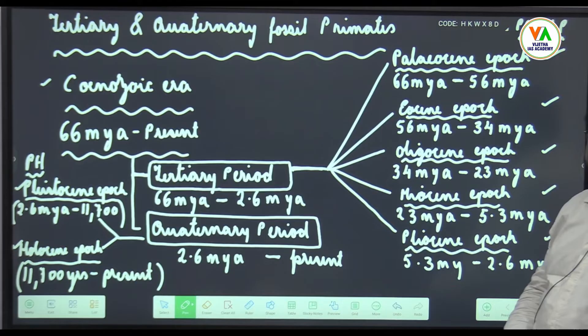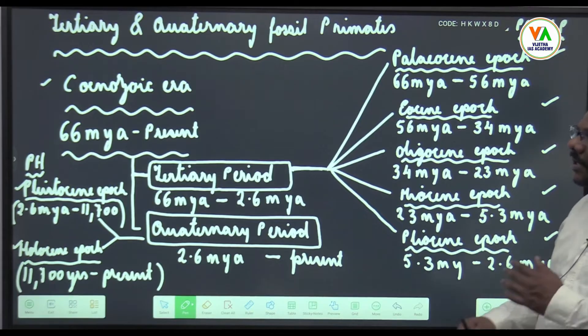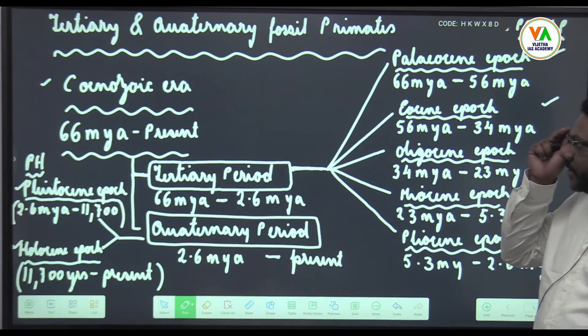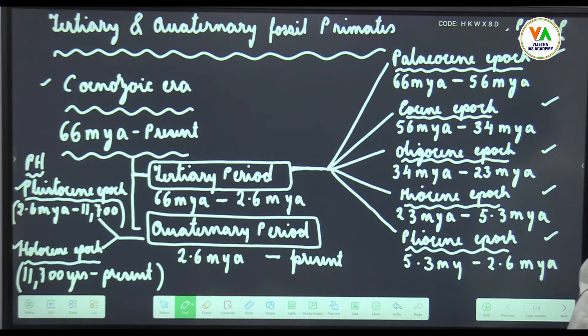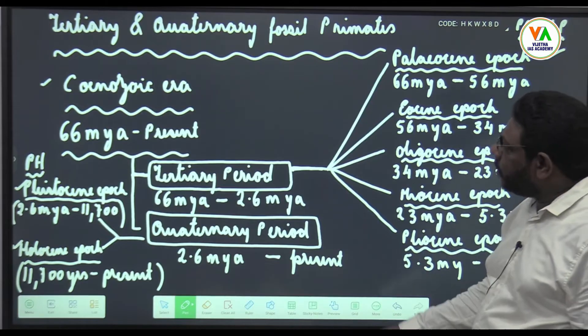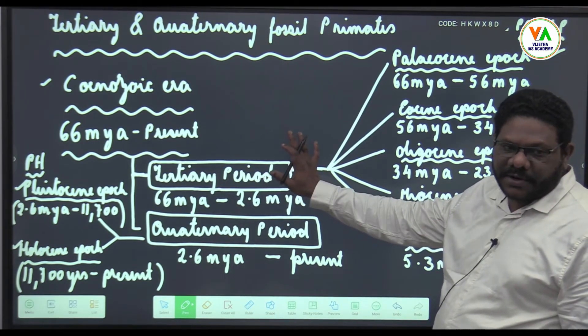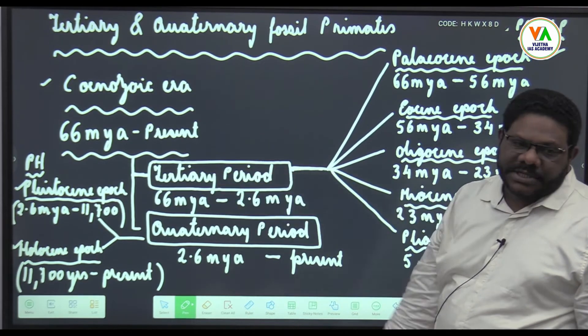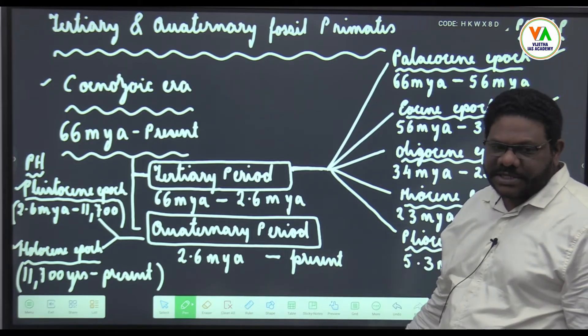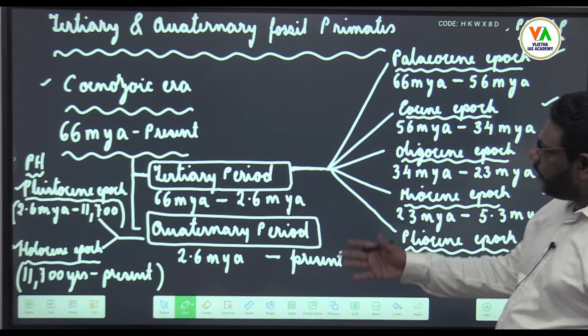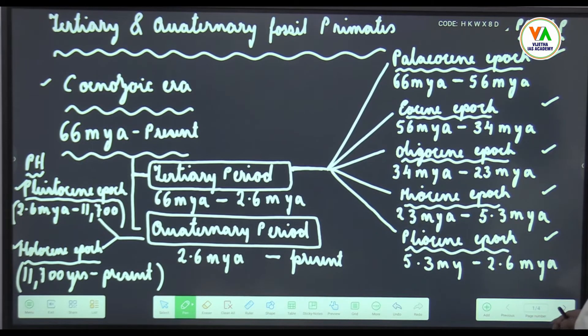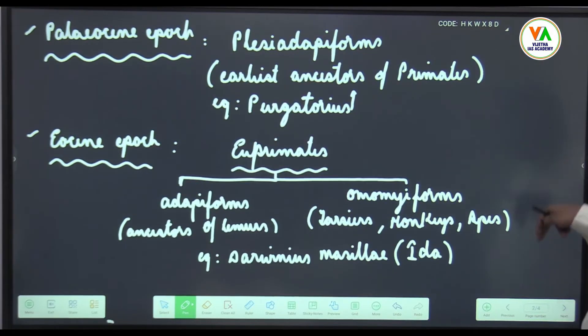This Cenozoic era is considered to be the era of mammals. Before Cenozoic, there is Mesozoic where vertebrates came into existence except mammals. Cenozoic era is considered to be the era of mammals. You can see primates also evolved here only, so it is the era of mammals and primates. In Pleistocene, human beings came into existence, so that is the era or epoch of human beings. Quaternary we are present in Holocene.